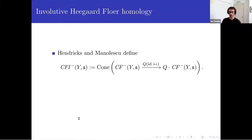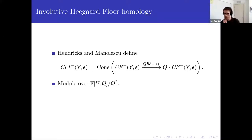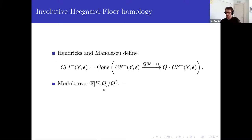If you compose these two maps, you get an endomorphism of the Heegaard Floer complex itself — that's the involution. Hendricks and Manolescu define the involutive Heegaard Floer homology as the mapping cone of the identity plus the involution. They add in a formal Q variable, which is just notation, because you can view this as a module over F adjoin U mod Q squared. The Q action maps the domain part of the mapping cone to the codomain, sending a generator in the domain to the generator in the codomain. That's a nice way to package the involutive Heegaard Floer homology as a chain complex.